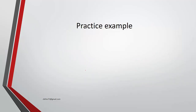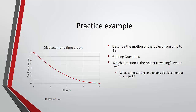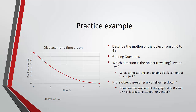Now, for some practice: by looking at the displacement-time graph, you should be able to deduce what the object is doing. Describe the motion of the object from time equals 0 to time equals 4. Guiding questions: which direction is the object traveling — positive or negative? To answer this, ask yourself what is the starting and ending displacement. Also, is the object speeding up or slowing down? Compare the gradient at the start and end — is it getting steeper or gentler?